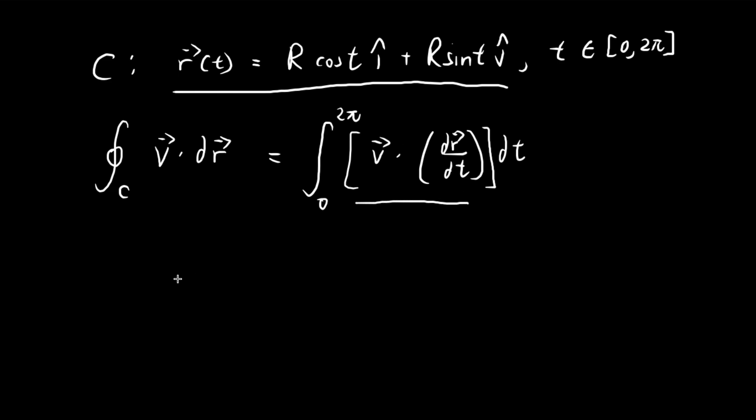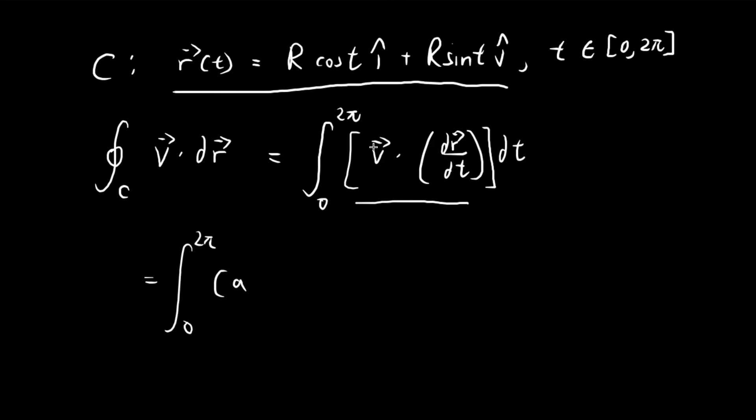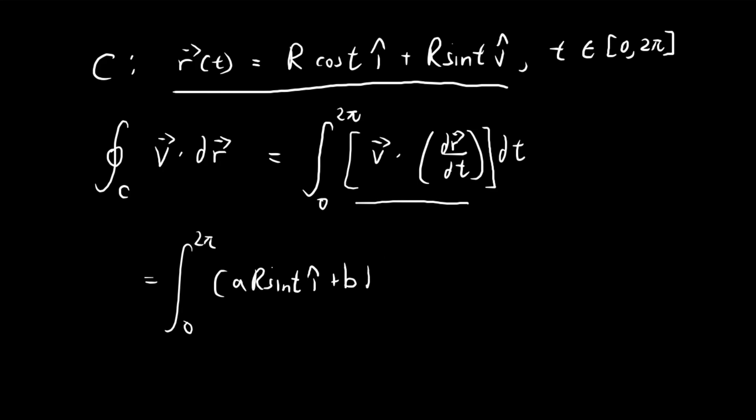Now we can simplify this expression. Note that the vector field is equal to ay, which is a times r sine t in the i direction, and bx, which is b times r cosine t in the j direction. We dot this with the derivative of the position vector with respect to time. We get negative r sine t in the i direction and r cosine t in the j direction, then dt. Here we just have a dot product.